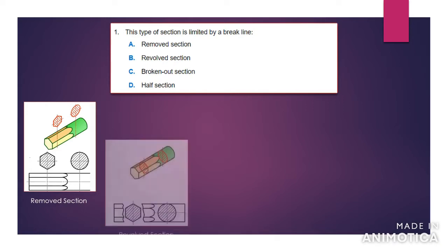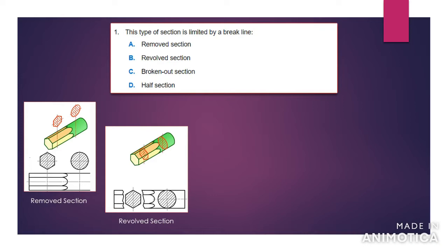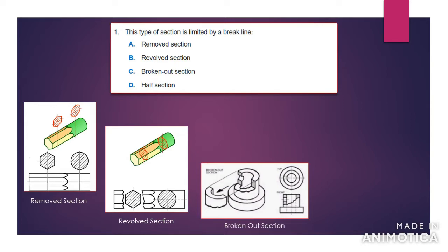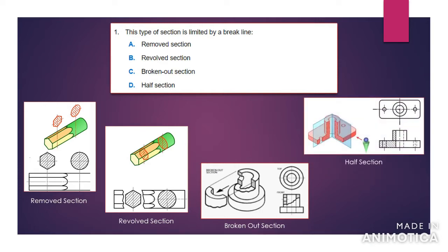The other one is the revolve section. The revolve section stays on the same plane of the object, but it is rotated or revolved in a different direction so that you can see it in two dimensions. A broken out section would be an example where you take out a piece of the object so you can actually see the inner workings of that object. Then you have the half section where you take out a portion — it might look like a quarter of the section, but it's called a half section because you're taking out half of each axis, the x and the y axis of that object.